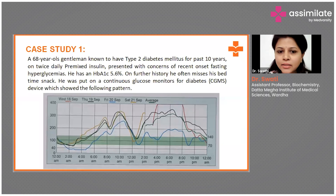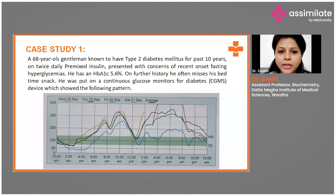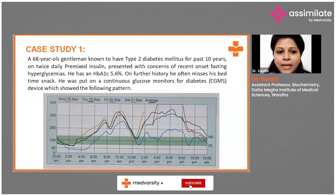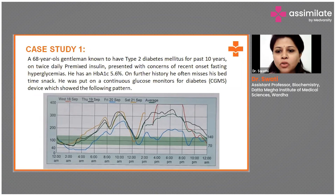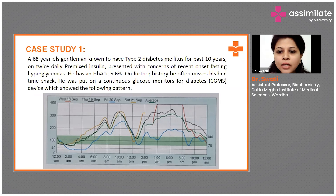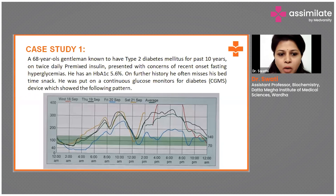Case study one: a 68-year-old gentleman known to have type 2 diabetes mellitus for the past 10 years, on twice daily premixed insulin, presented with concerns of recent onset fasting hyperglycemia. He has an HbA1c of 5.6%. On further history, he often misses his bedtime snack. He was put on a continuous glucose monitor which showed the following pattern.